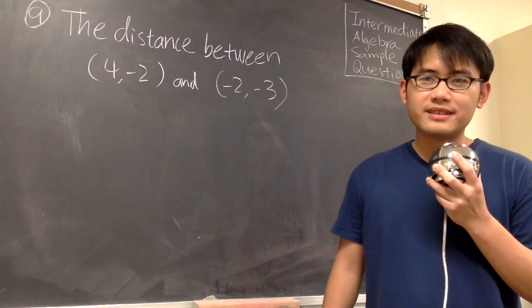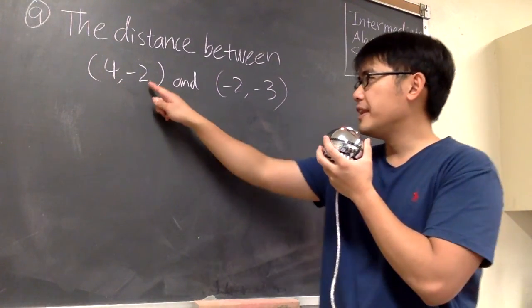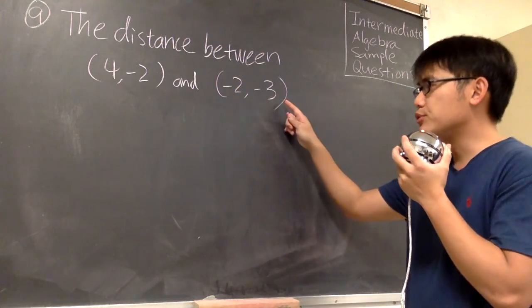For number 9, we are going to find the distance between these two points: (4, -2) and (-2, -3).